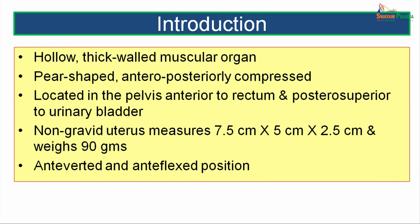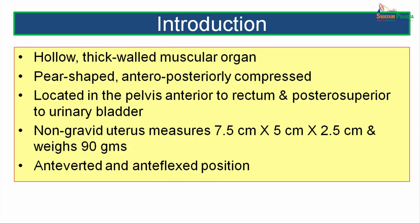Introduction. The nulliparous uterus — meaning the uterus of a female who has never conceived — measures about 7.5 cm in length, 5 cm in breadth, and 2.5 cm anteroposteriorly, and weighs about 90 grams. The normal position of this non-gravid nulliparous uterus is said to be that of anteversion and anteflexion.